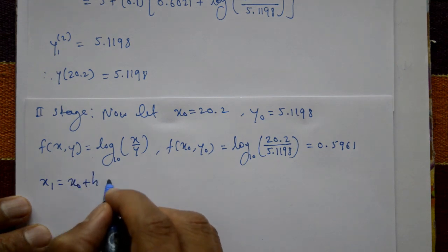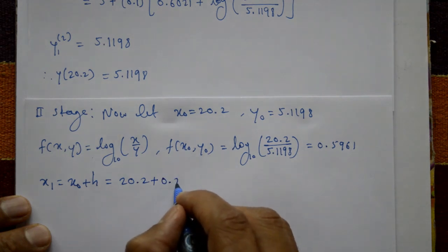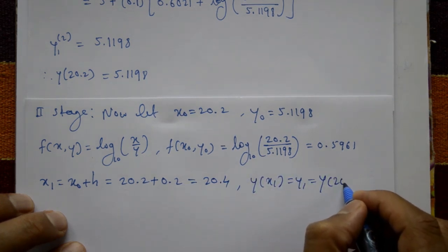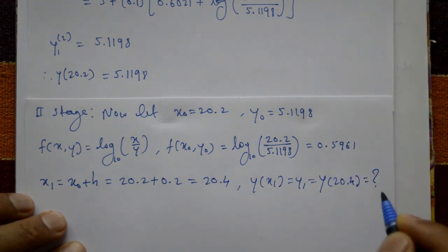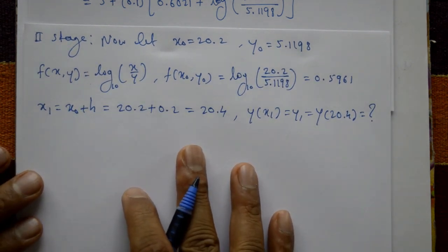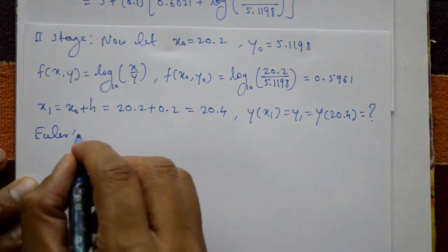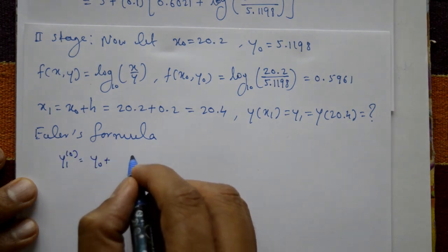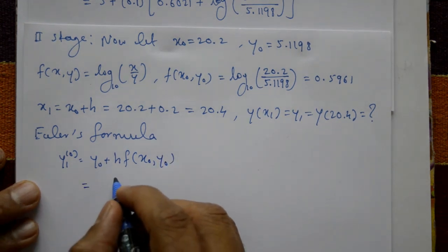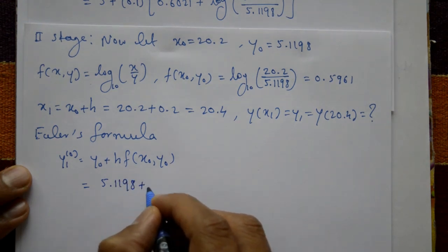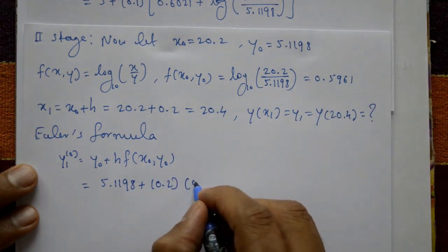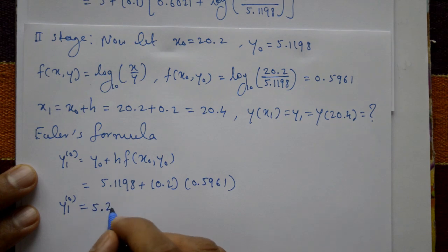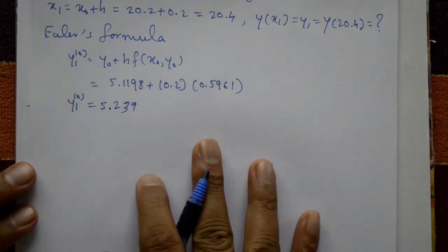x₁ = x₀ + h = 20.2 + 0.2 = 20.4, so y(x₁) = y(20.4) is the required value. Using Euler's formula: y₁ = y₀ + h × f(x₀, y₀) = 5.1198 + 0.2 × 0.5961 = 5.239. This value is not accurate, so we proceed to Modified Euler's formula.